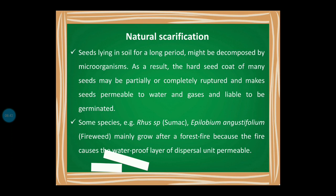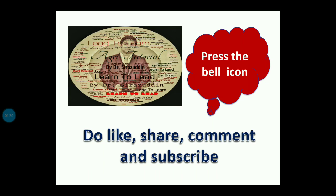After rupturing, the seed becomes permeable to gases and water. There are some species like Rhus species — known as sumac — and Epilobium angustifolium — known as fireweed — which mainly germinate only after a forest fire. This is because fire causes the waterproof layer on the seed's surface to become permeable, allowing water entry and enabling germination.